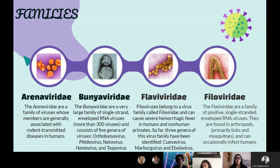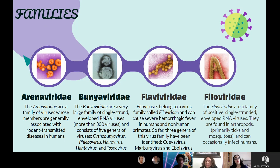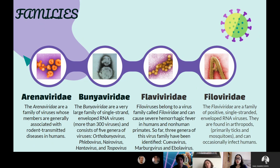There are four main types of families of viruses. First, there are the RNA variety. Both members are generally associated with rodent-transmitted disease in humans. Then the Bunyaviridae, which are a large family of single, enveloped RNA viruses and comprise five genera. Then the Flaviviridae, which belongs to a virus family called Filoviridae and can cause severe hemorrhagic fever in humans and non-human primates. And finally, Filoviridae, a family of negative-sense single-stranded enveloped RNA viruses. They are found in arthropods and can occasionally infect humans.